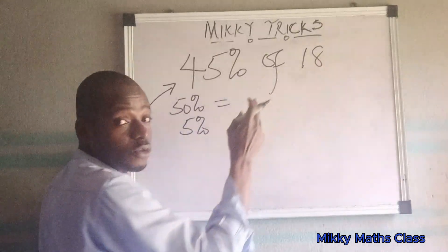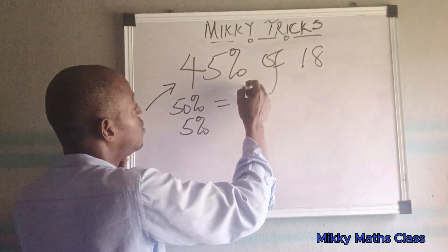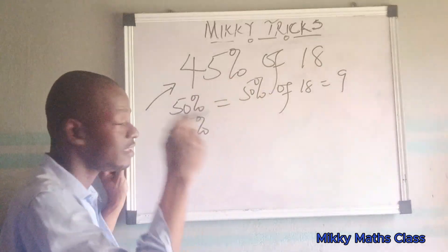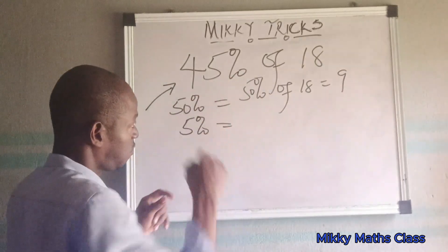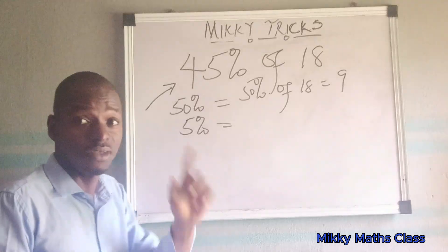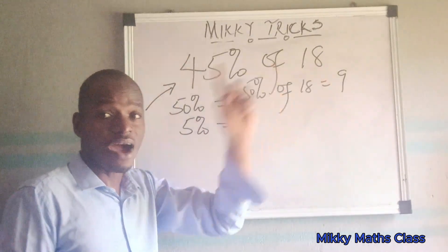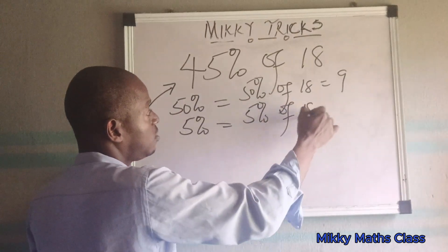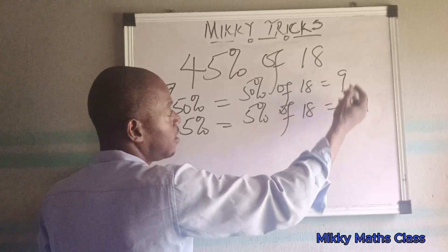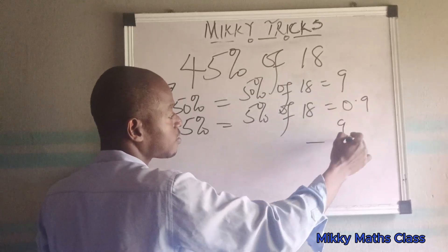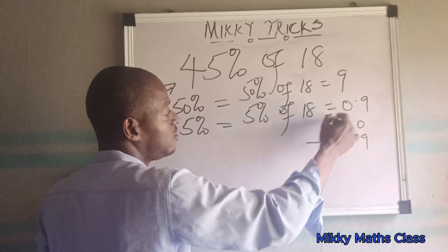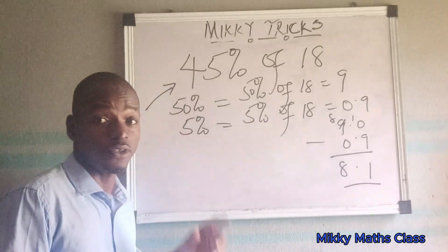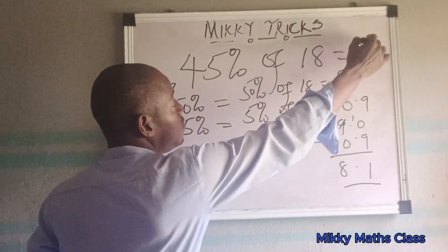50% of 18 is 9, because half of 18 is 9. For 5% of 18, first find 10%, which is 1.8, then take half of that to get 0.9. So 5% of 18 is 0.9. Subtracting: 9 minus 0.9 gives us 8.1. So 45% of 18 is 8.1.